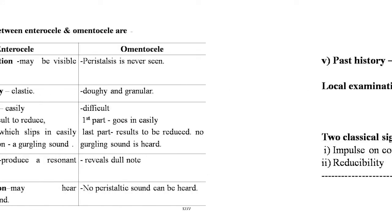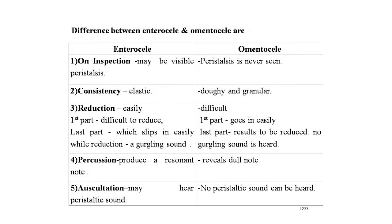Differences between enterocele and omentocele: In enterocele on inspection, visible peristalsis may be seen; in omentocele, peristalsis is never seen. Enterocele consistency is elastic; omentocele consistency is doughy and granular. In reduction of enterocele, first part is difficult to reduce but the last part slips in easily with a gurgling sound; in omentocele, reduction is difficult with the first part going in easily but the last part resisting, and no gurgling sound is heard. On percussion, enterocele produces a resonant note and omentocele a dull note. On auscultation, peristaltic sounds may be heard in enterocele; no peristaltic sound in omentocele.